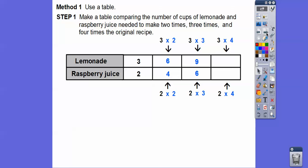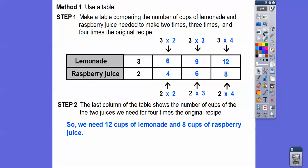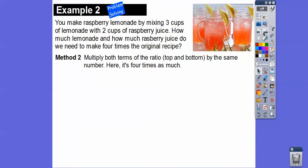Three times four is twelve, and two times four is eight. The last column of the table shows twelve cups of lemonade and eight cups of raspberry juice. So we need twelve cups of lemonade and eight cups of raspberry juice.